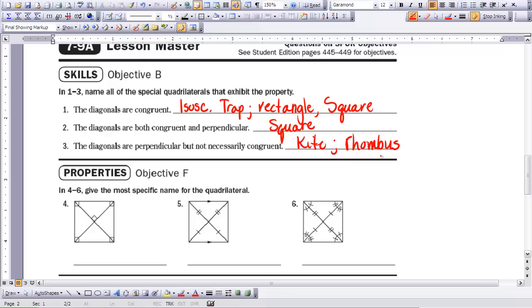So in number four, we know it's got four right angles. And we know that the diagonals are perpendicular to each other. By definition, at first, if you just look at the four right angles, that could be a rectangle or a square.